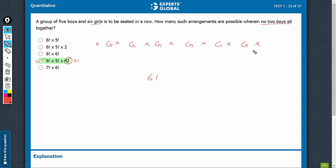Now, these seven slots can be filled by boys in 7P5 ways. Seven slots, five boys, 7P5 ways.